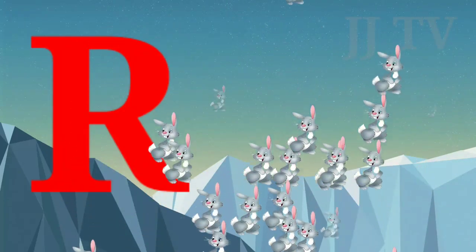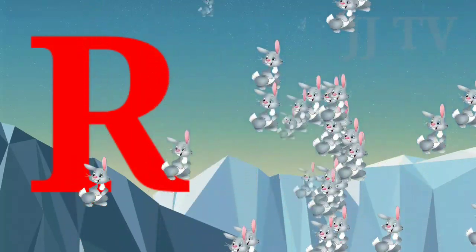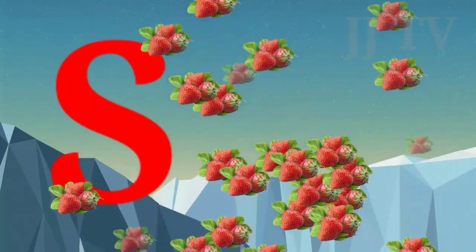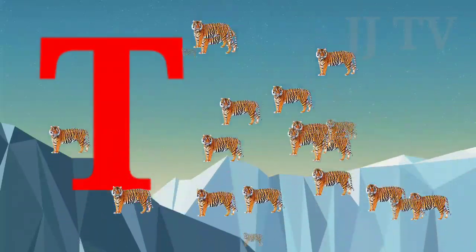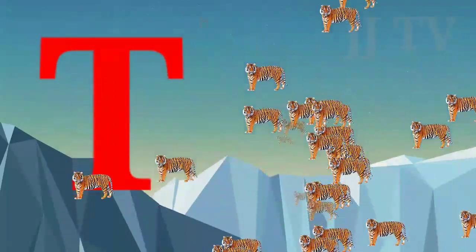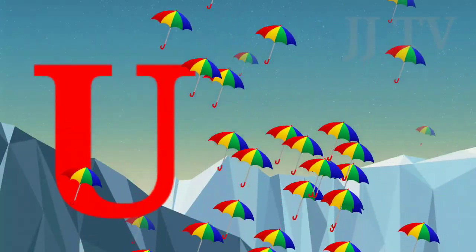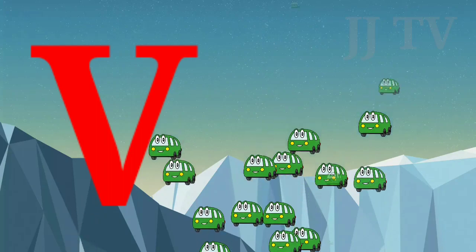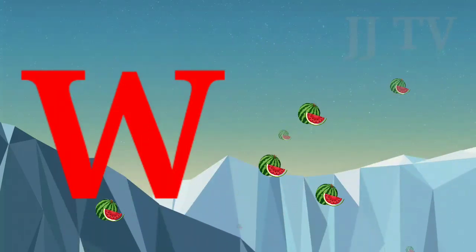R for rabbit, S for strawberry, P for tiger, U for umbrella, V for van, W for watermelon.